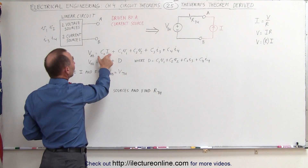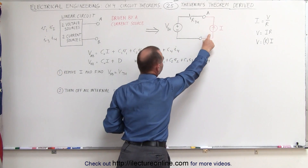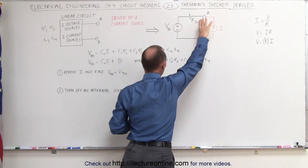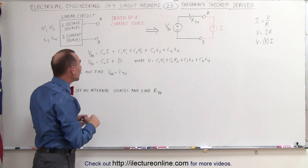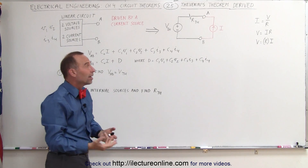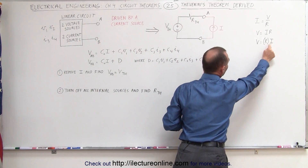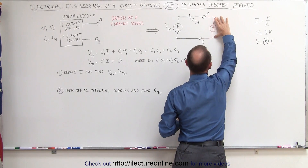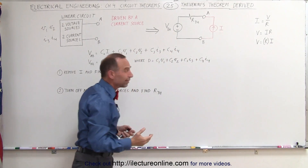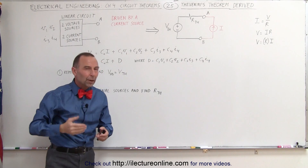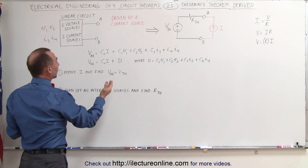To that we have to add the voltage contribution of the current that's driving the circuit, which will also have an effect on the voltage between A and B. It'll be some constant times I — using this concept right here — giving a voltage drop or rise according to this current, depending upon which direction the current is going.